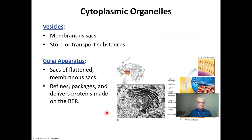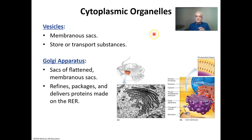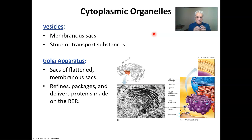Vesicles are just membranous sacs — they have a phospholipid bilayer inside the outer cell membrane, which is also a phospholipid bilayer. We can have multiple vesicles with a phospholipid bilayer around them inside the cell. These are used to transport substances either around the cell itself or to the outside of the cell.